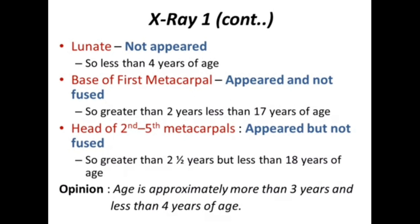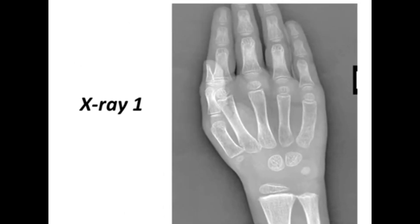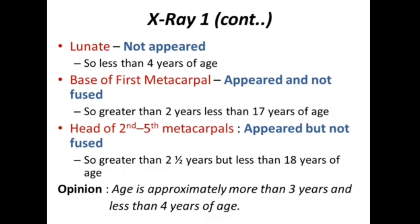The base of the first metacarpal is seen but not fused, so age is greater than two years but less than 17 years. Head of second to fifth metacarpals: absent — not fused — so age is greater than 2.5 years but less than 18 years. Lunate is not appeared, so it will be less than four years. Opinion: the age is approximately more than three years but less than four years.